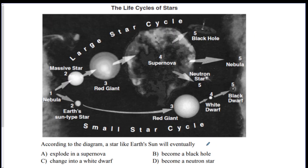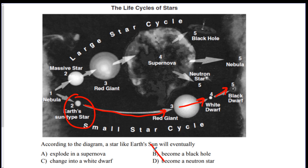According to the diagram, a star like Earth's sun will eventually do what? Following the chart for an Earth-type sun, it's eventually going to turn into a red giant, then a white dwarf, and then a black dwarf. It's not going to become a black hole, a neutron star, or explode in a supernova. C is the best answer.